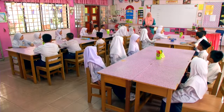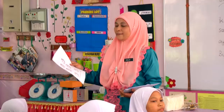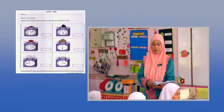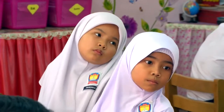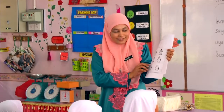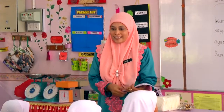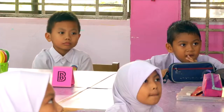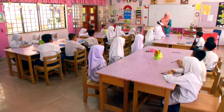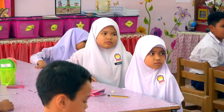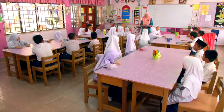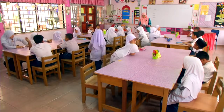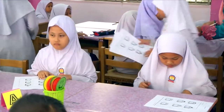Cikgu mahu semua murid 2 Syuhadah siapkan lembaran kerja yang cikgu telah sediakan ini. Terdapat enam soalan di sini. Cikgu mahu setiap orang tuliskan jisim objek berdasarkan gambar yang cikgu beri — ada gambar dan ada bacaannya sekali. Tuliskan dengan betul. Ketua kumpulan sila ke hadapan ambil soalan untuk ahli kumpulan dan edarkan kepada ahli kumpulan.